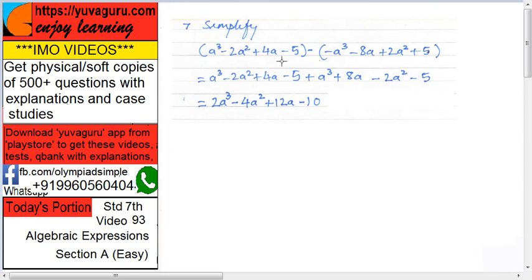Okay, so a cube and a cube becomes 2a cube. 2a square and 2a square both have minus sign, so minus 4a square. Sign of the bigger: